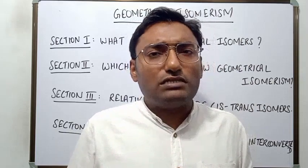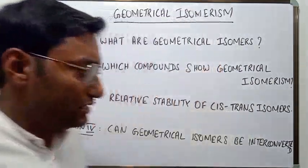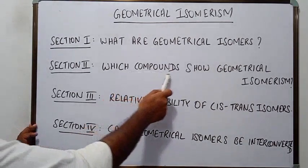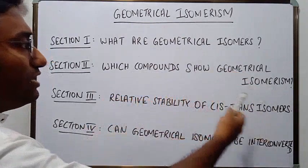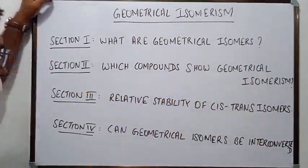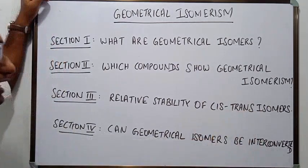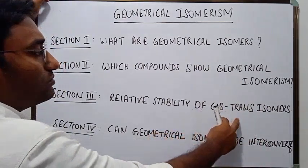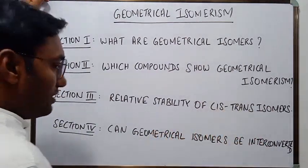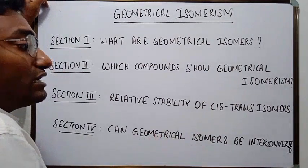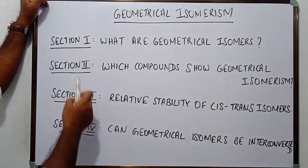We will discuss geometrical isomerism in four sections. Section 1: what are geometrical isomers — we will define it and see an example. Section 2: which compounds show geometrical isomerism — alkene, alkane, or alkyne? Section 3: relative stability of cis and trans isomers — we will compare them and determine which is more stable. Section 4: can geometrical isomers actually be interconverted?